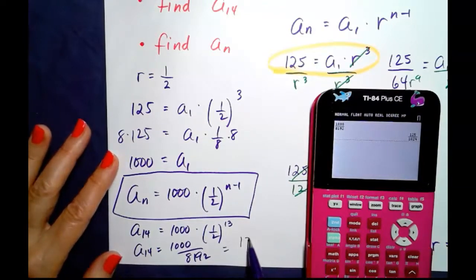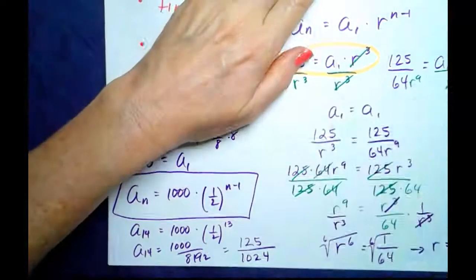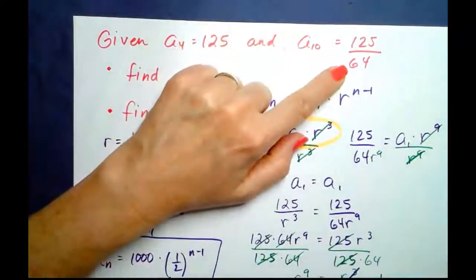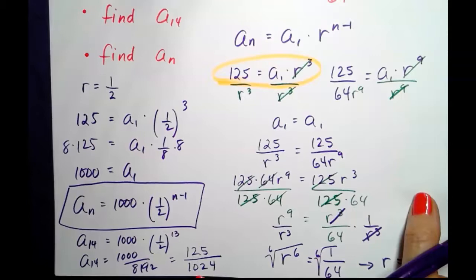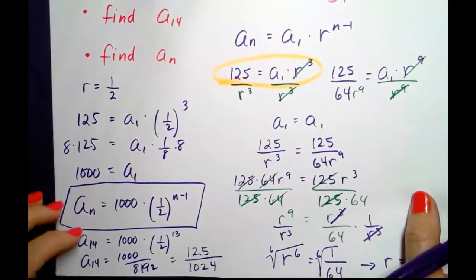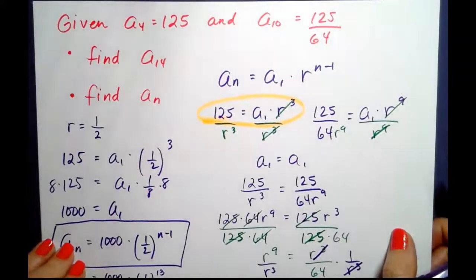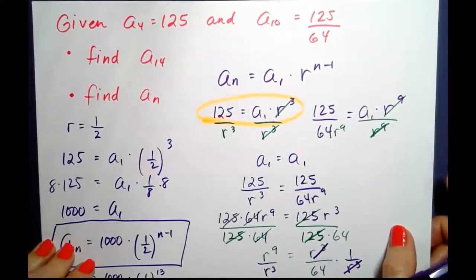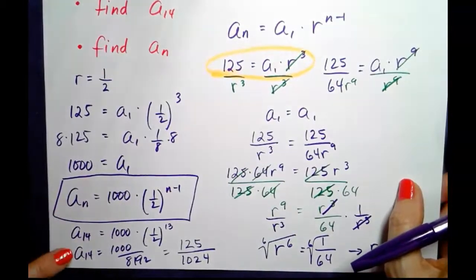Which makes sense. Given the a sub 10 was 125 over 64, basically that power of 2 is just increasing on the bottom. So there you go. That's how you can be given any two terms in a geometric sequence and find the general term as well as any other term in that sequence.